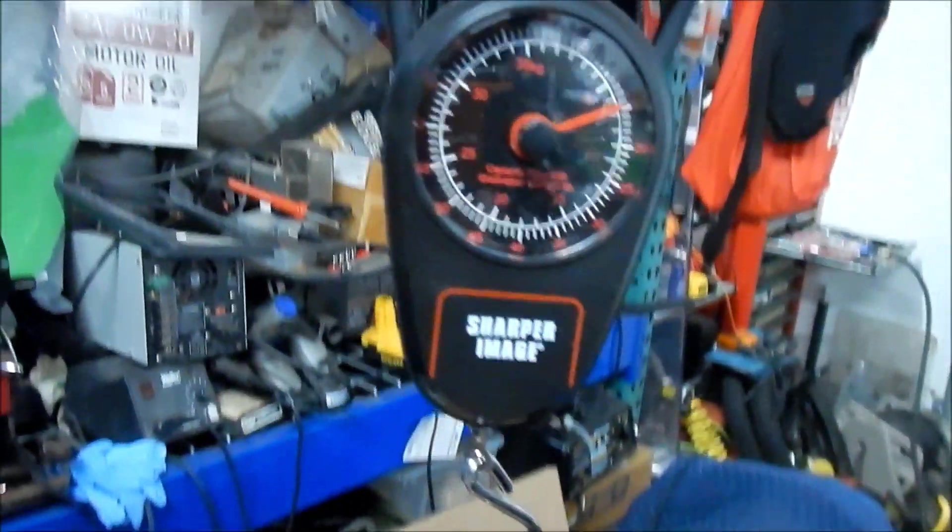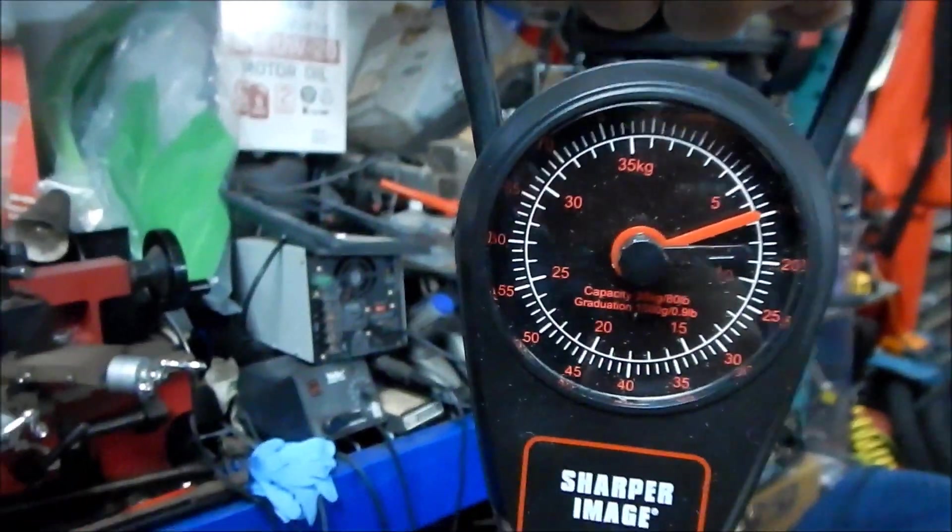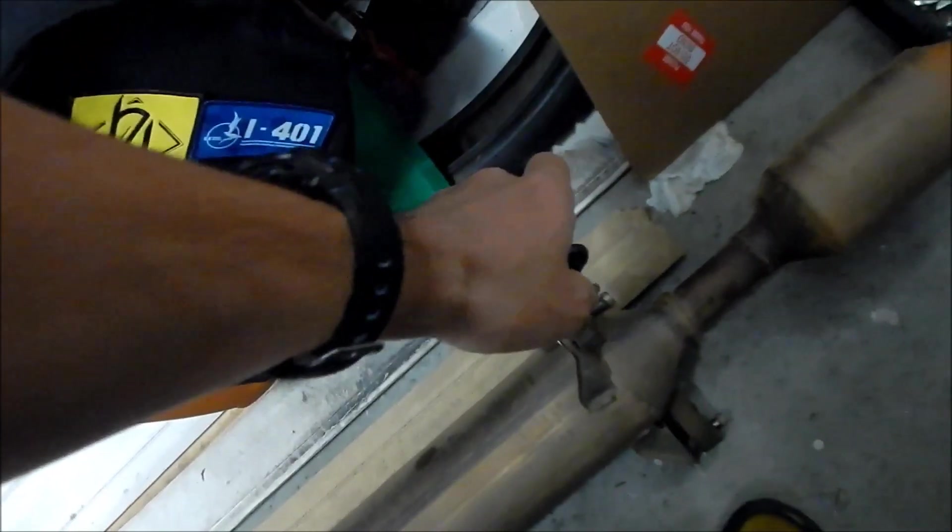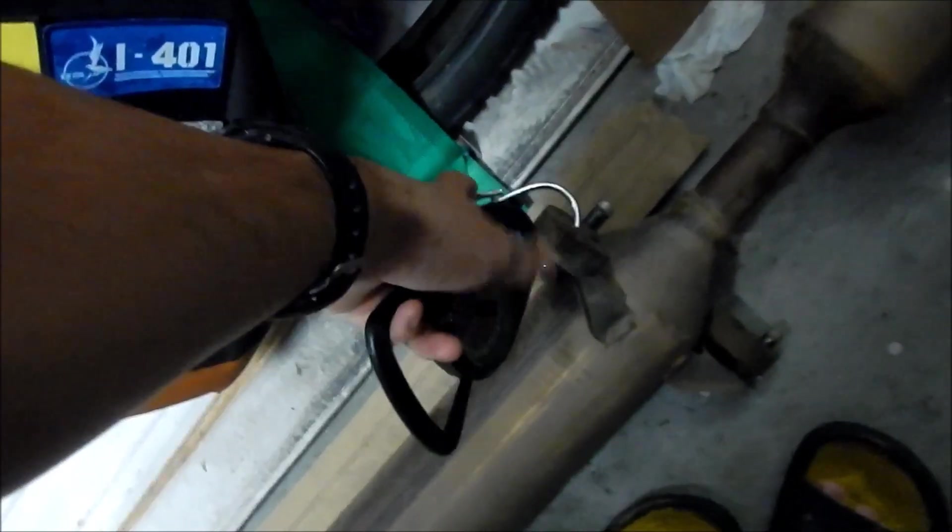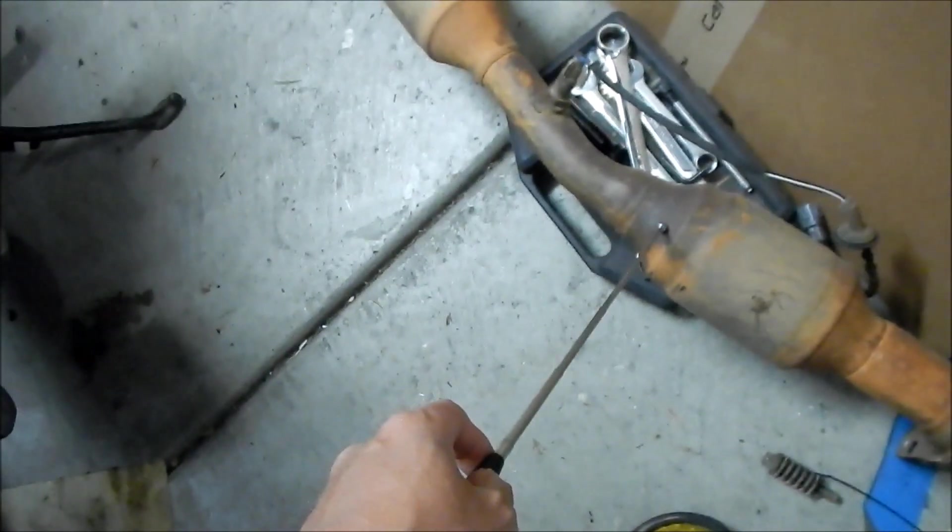Little sharper image luggage scale. I could probably pick it up by the exhaust hanger here. Look at how much it weighs. It weighs 15 pounds. 15 pounds. Can you believe it? This long pipe weighs 15 pounds. It must be made out of titanium or something. I have no idea what it's made out of.